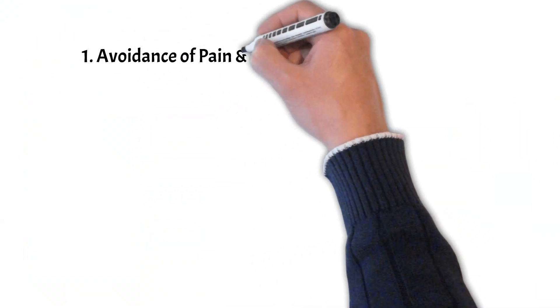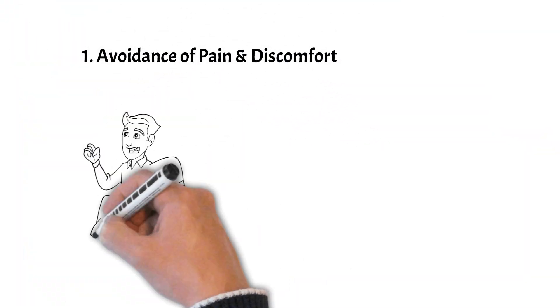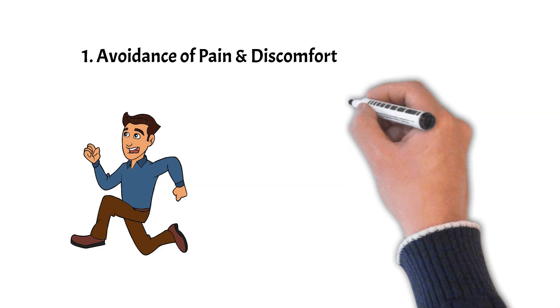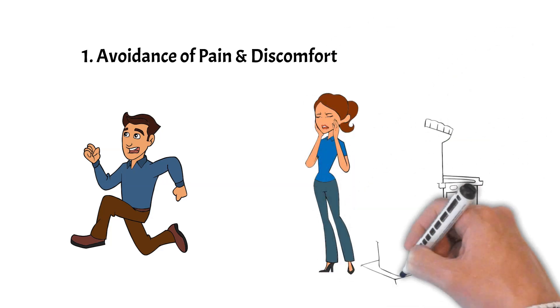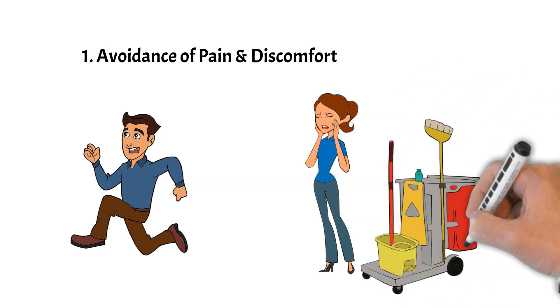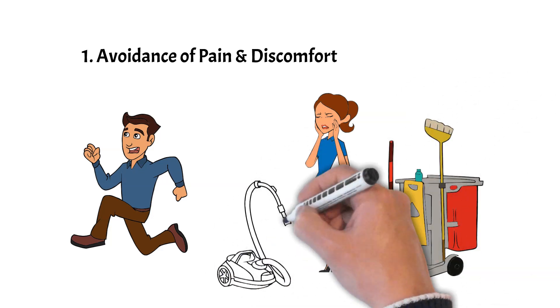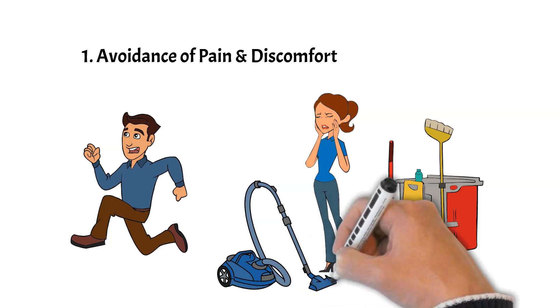1. The avoidance of pain or discomfort. Type 7s have a tendency to want to avoid negative feelings or unpleasant situations, which can sometimes come off as being dismissive or inauthentic to others.